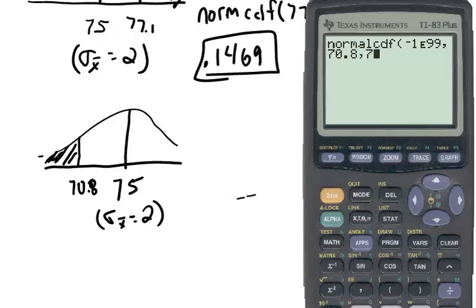comma, the mean, 75, comma, 2. So we get 0.01786.